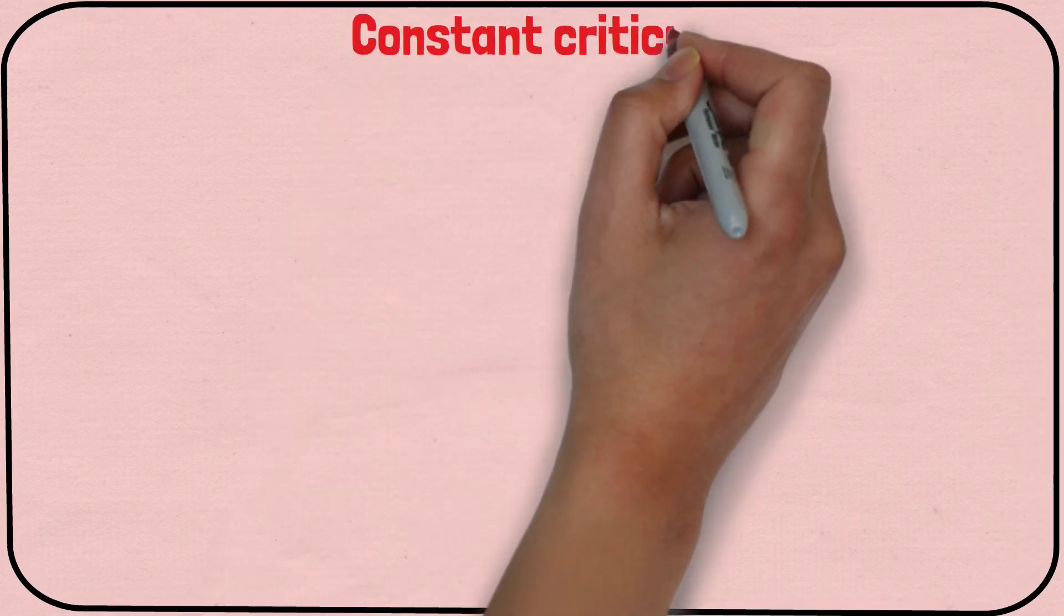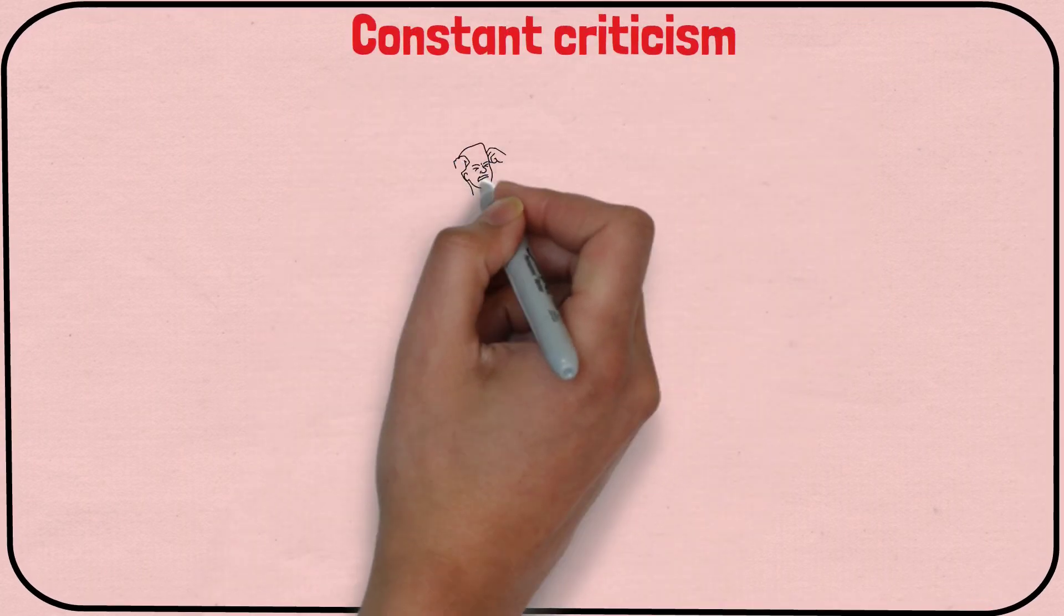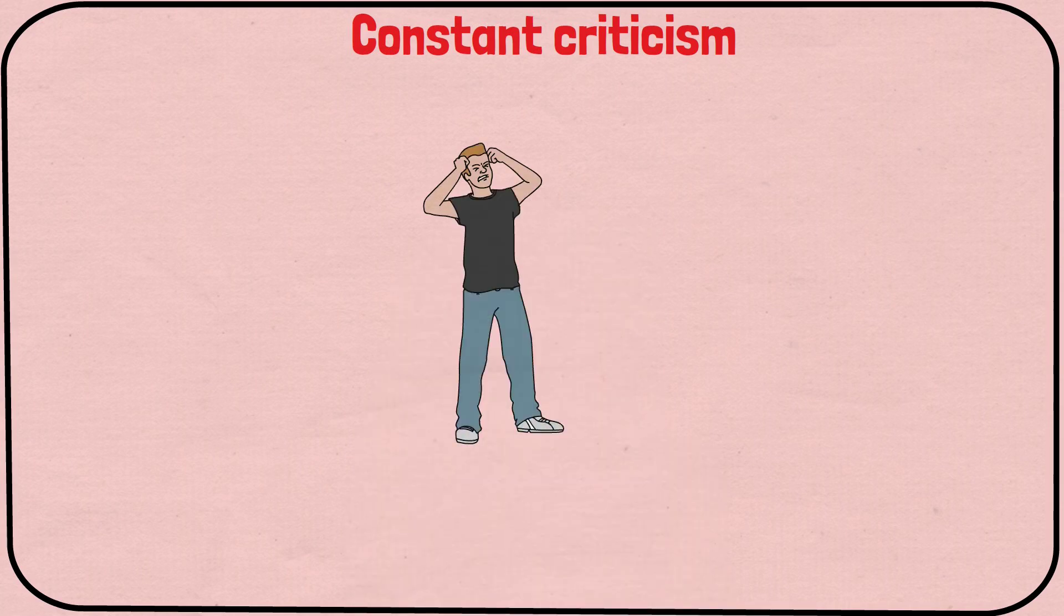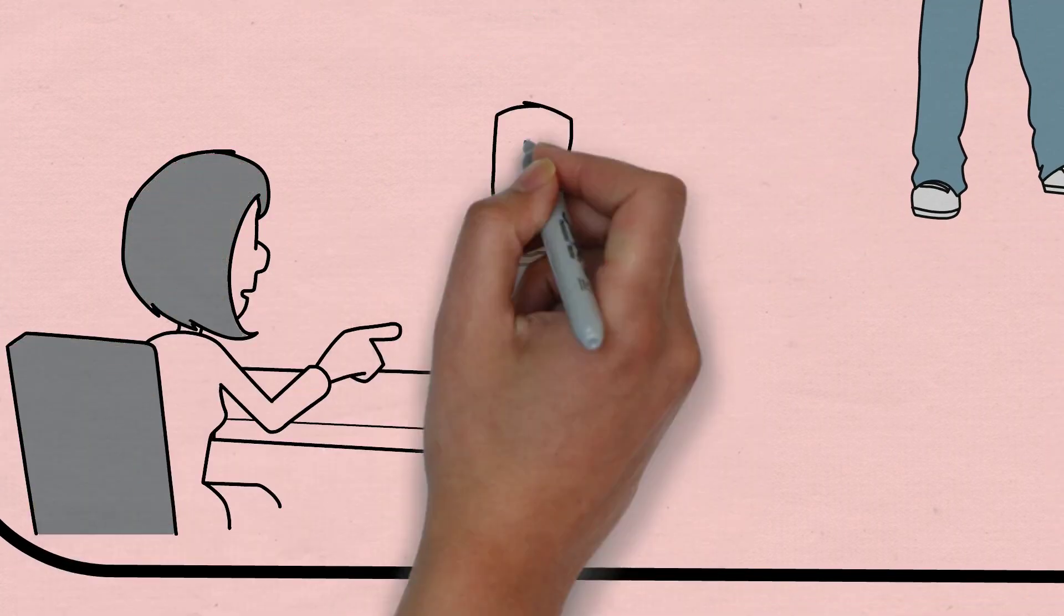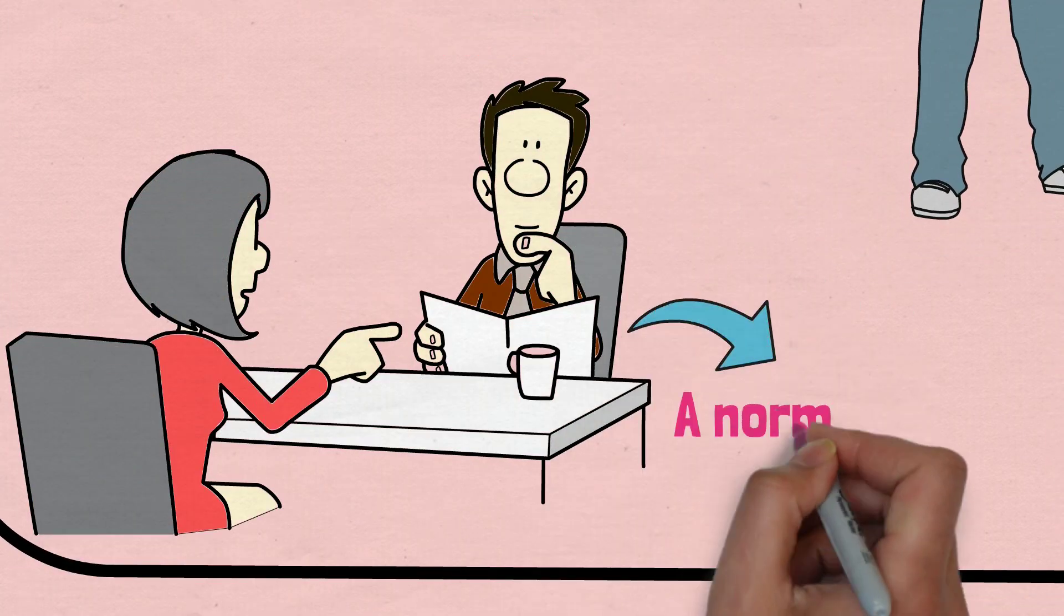The first flag to pay attention to is constant criticism. Your partner constantly criticizing and belittling you can be a sign of emotional abuse, because no one deserves to be constantly put down. Understand, first of all, that criticism is a normal part of any relationship.